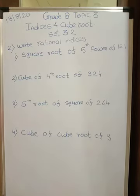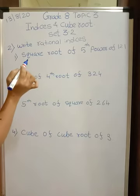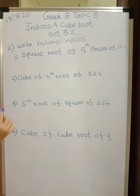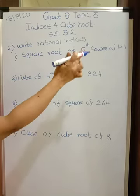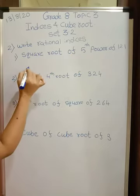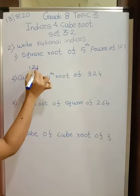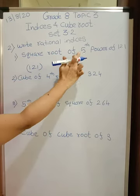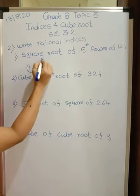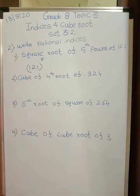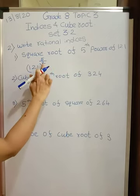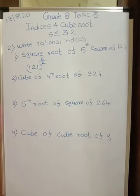Now second question is write in the form of rational indices. In words they have given, we have to write in the form of indices. Square root of fifth power of 121. So base is 121. First write 121, this is the base. Now what is the power? Fifth power. So 5 will be up because power is always in the numerator. And what is root? Root is square means 2. So second root or square root of fifth power of 121.